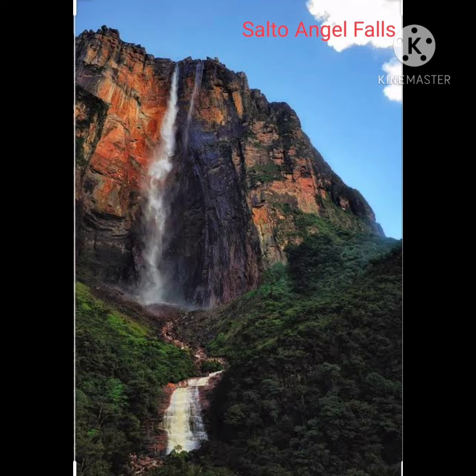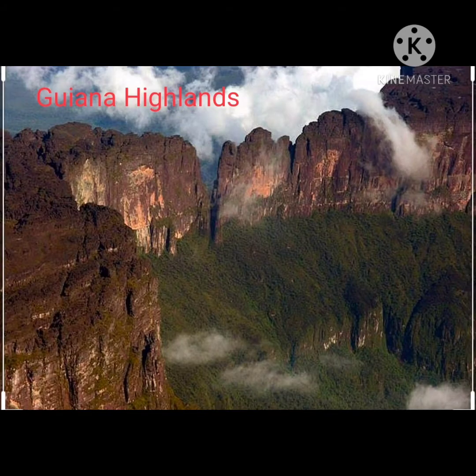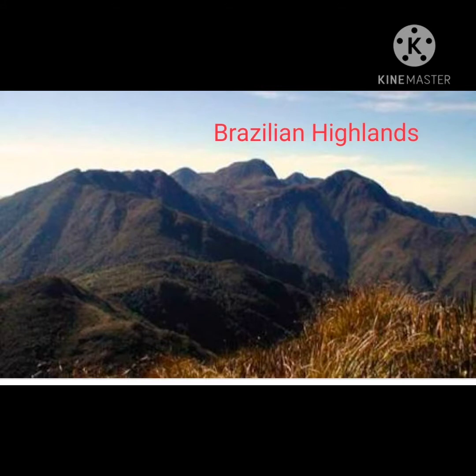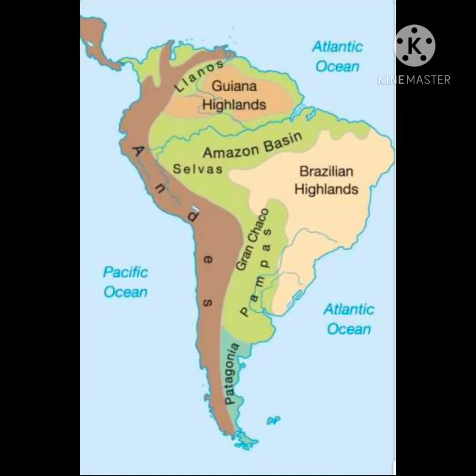The world's highest waterfall, the Salto Angel Falls in Venezuela, is located in this region. Its height is 979 meters. The eastern highlands are dissected hills — similar to dissected plateaus as we studied in the landform chapter.